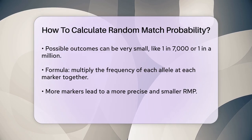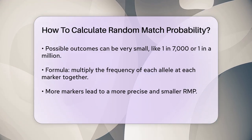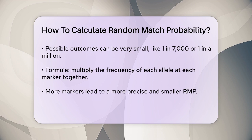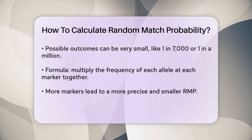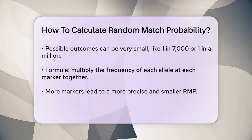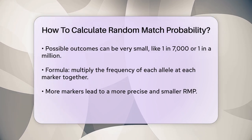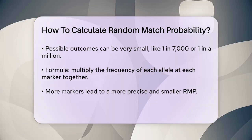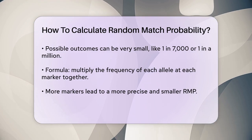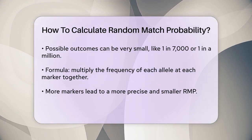In forensic science, this calculation is crucial. For example, if a DNA sample from a crime scene matches a suspect's DNA, the RMP helps determine how likely it is that this match is just a coincidence. If the RMP is very low, it suggests that the DNA samples probably came from the same person.